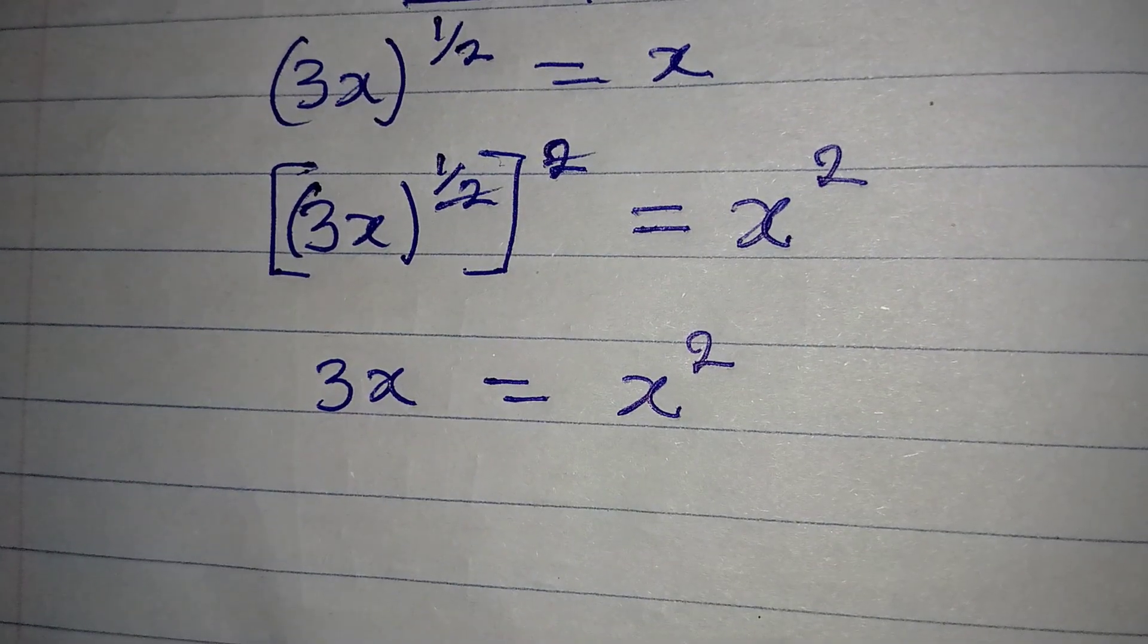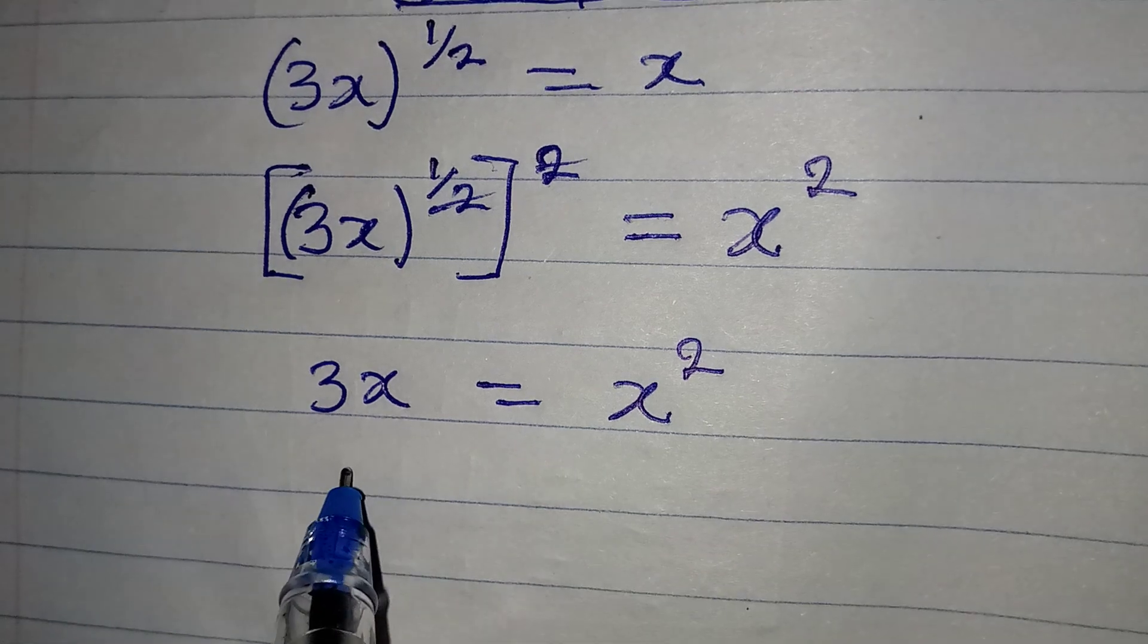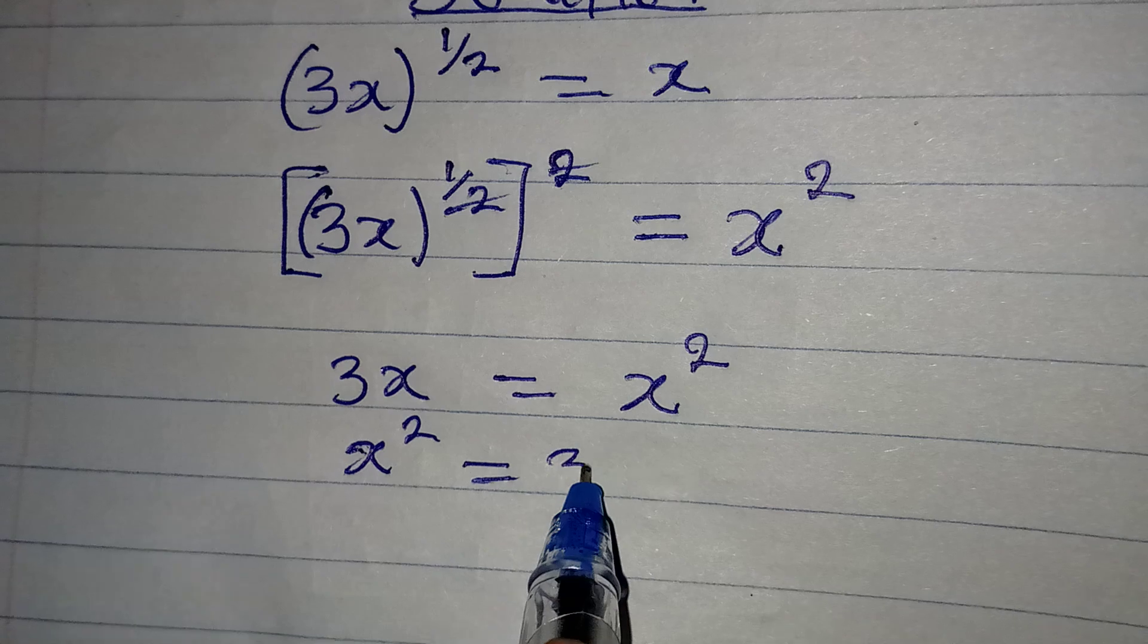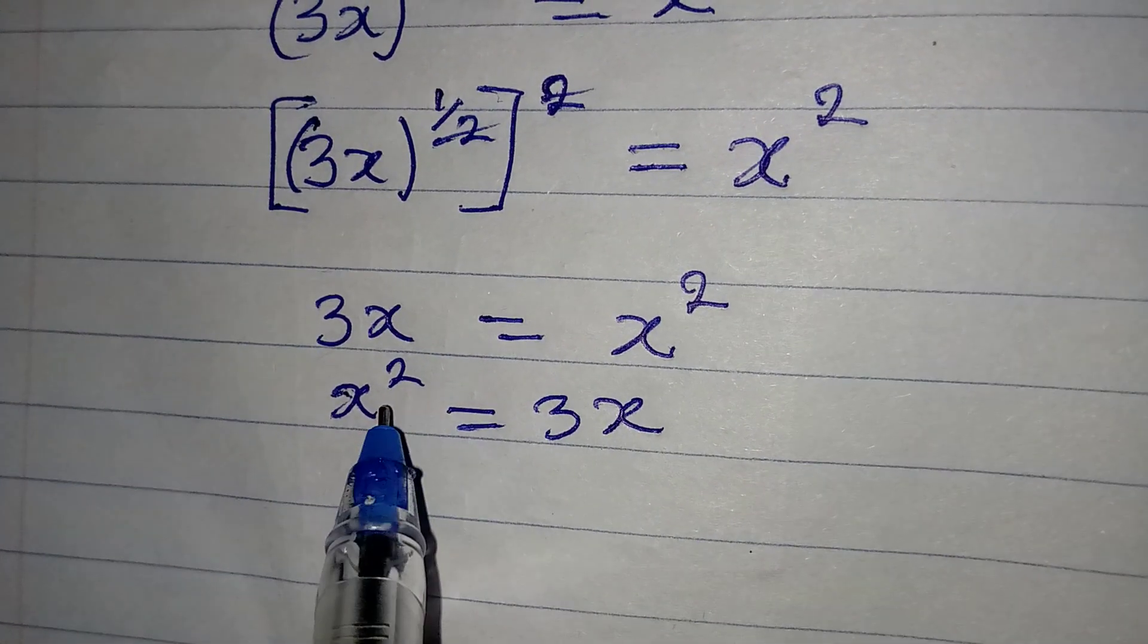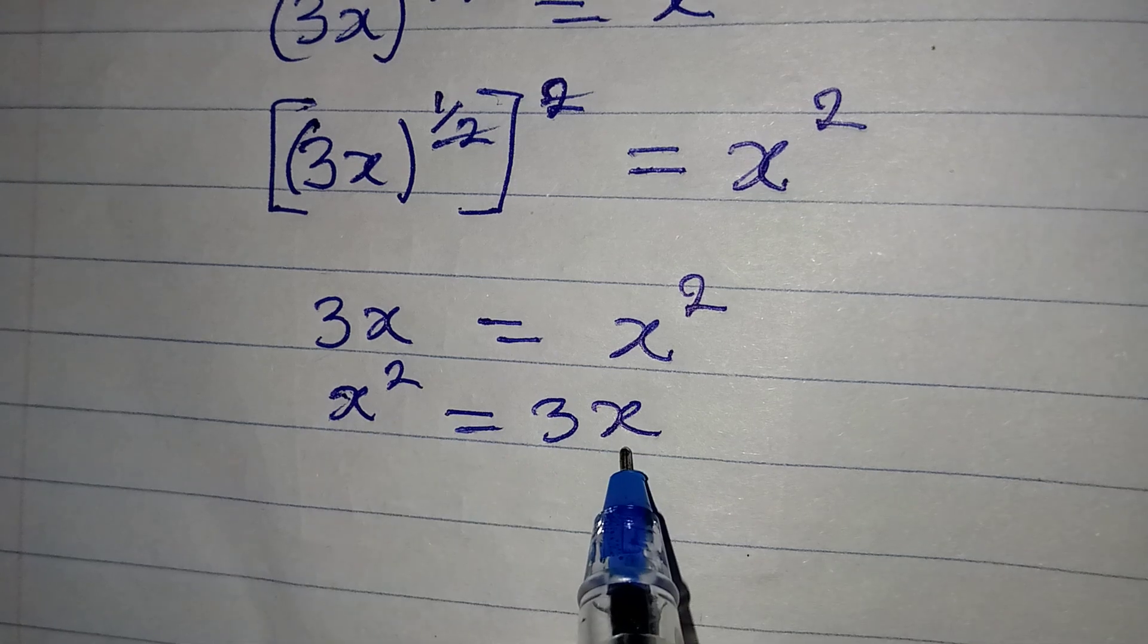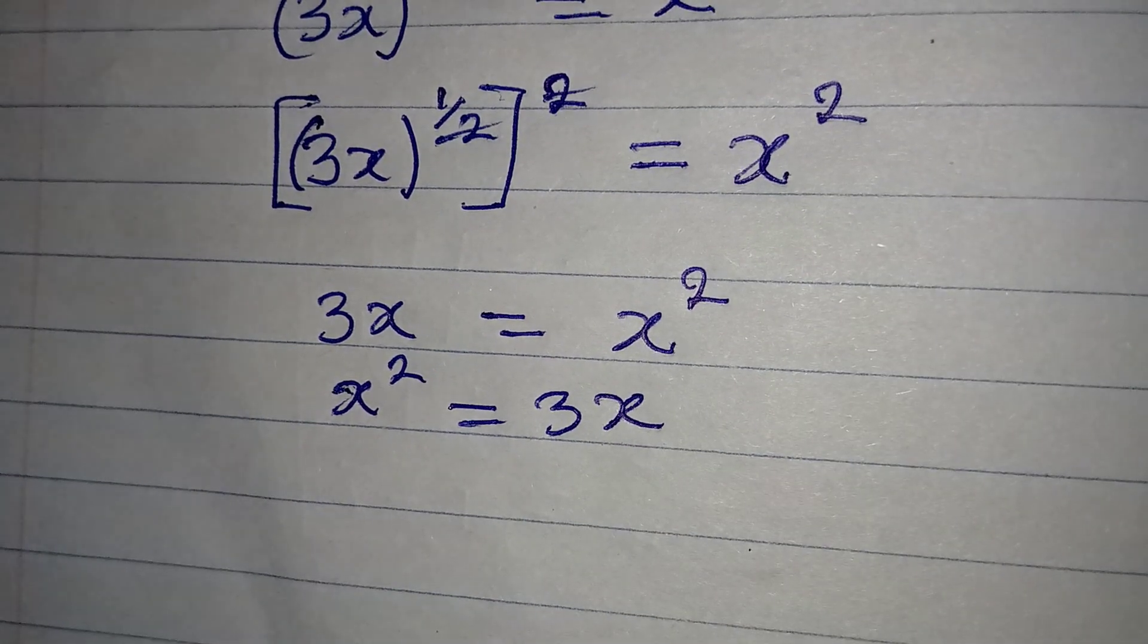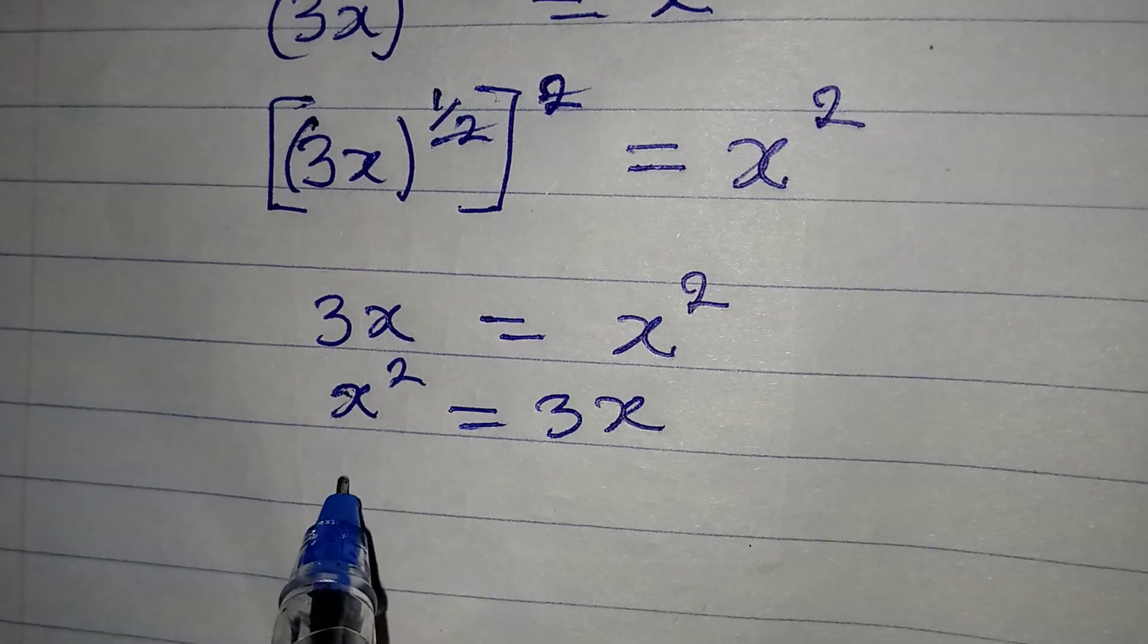By the way, we can turn it around so that we have x^2 = 3x. Right, now you're going to be wrong if you cancel one x from here and cancel this, because this is a quadratic equation where you have two solutions, right?